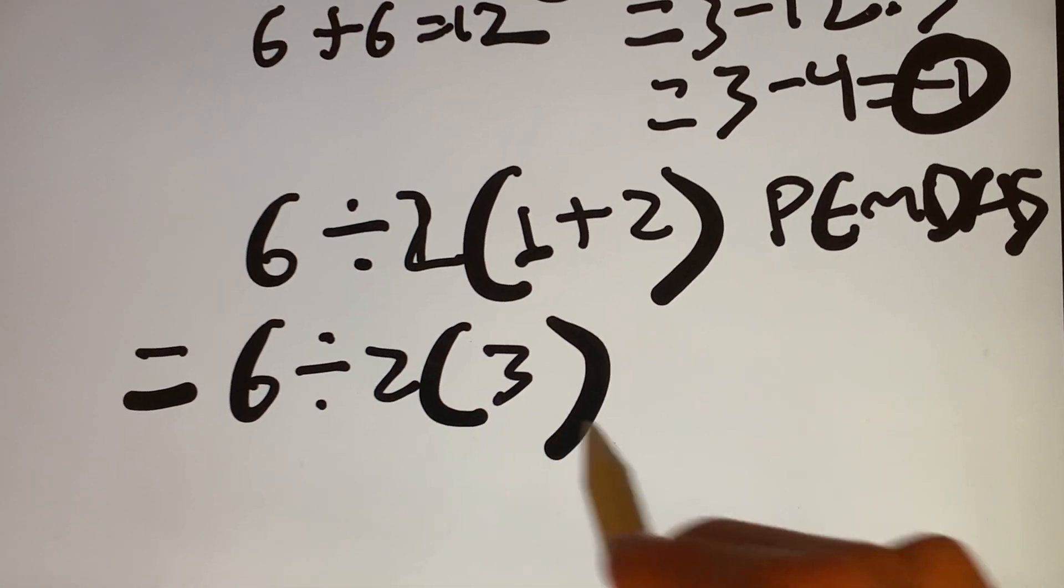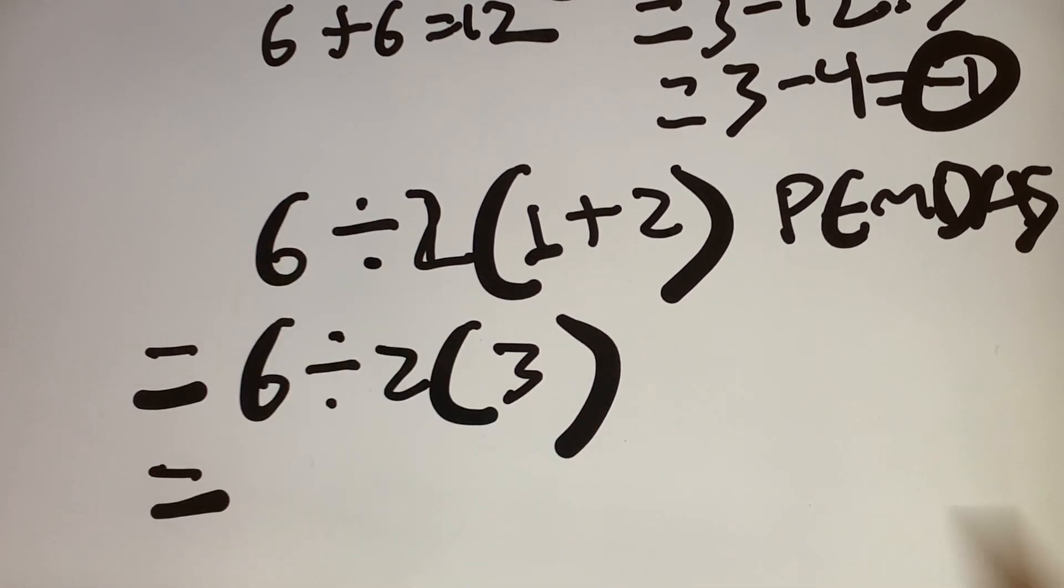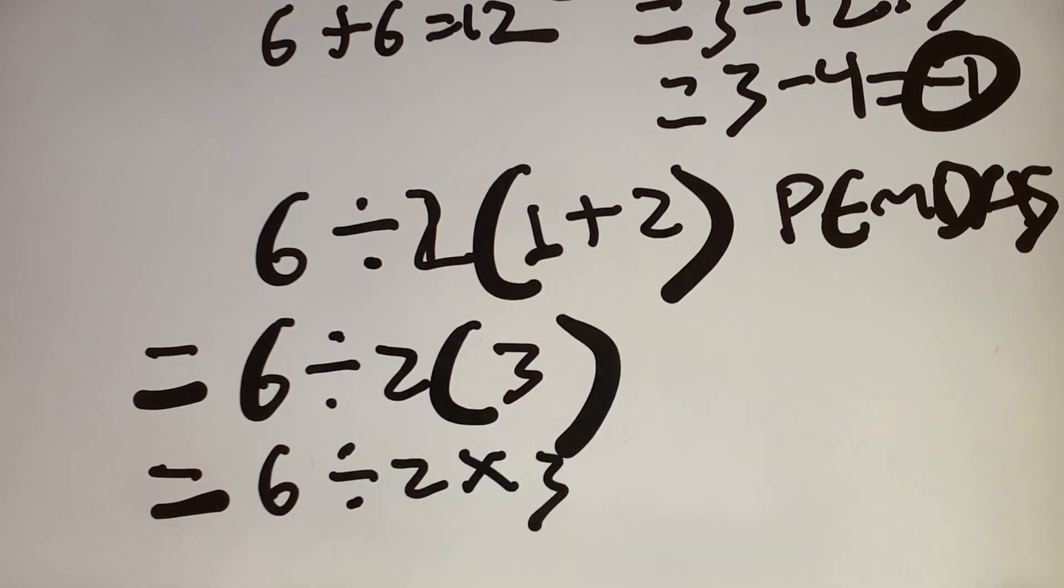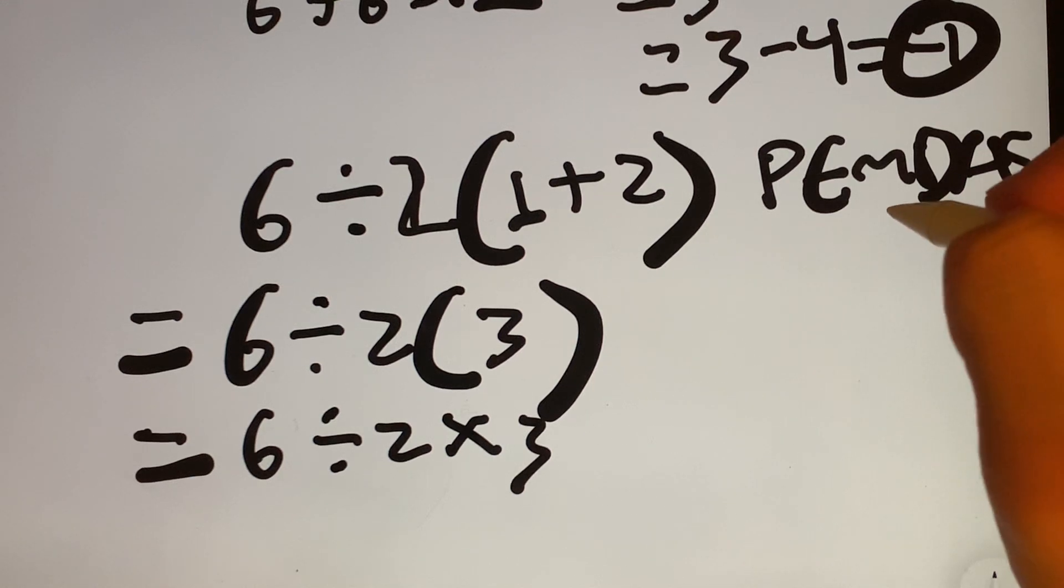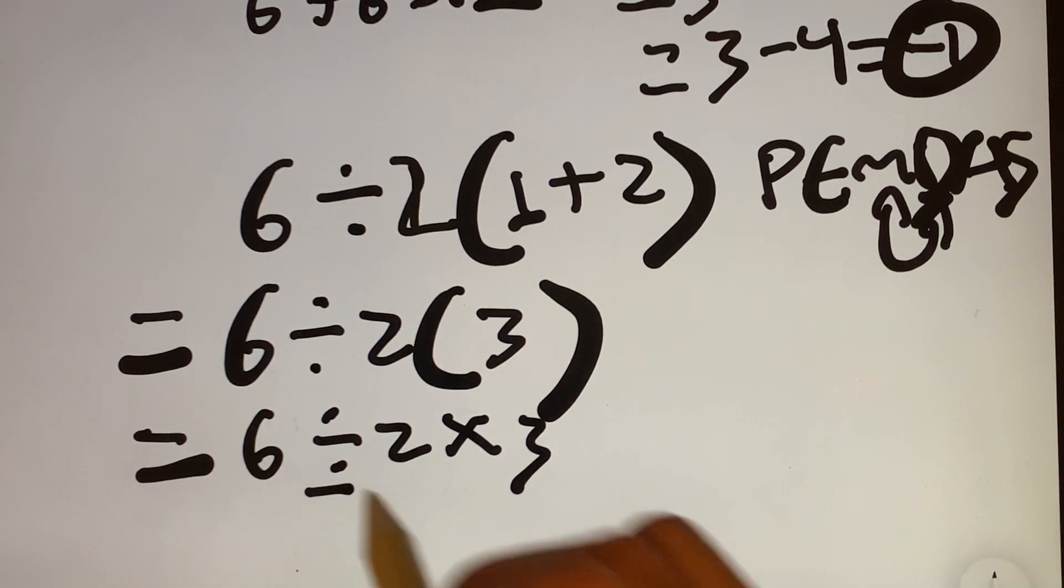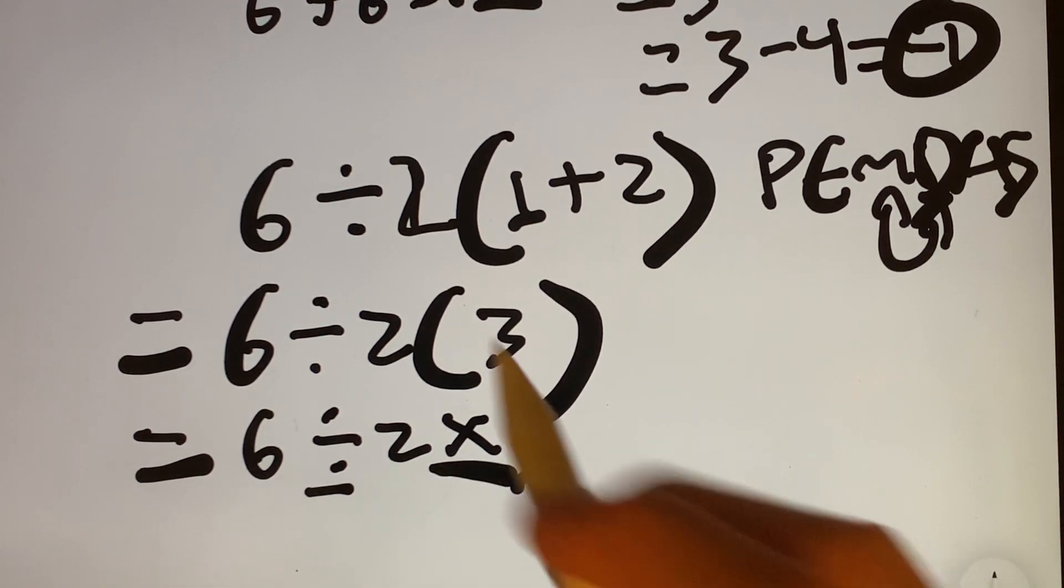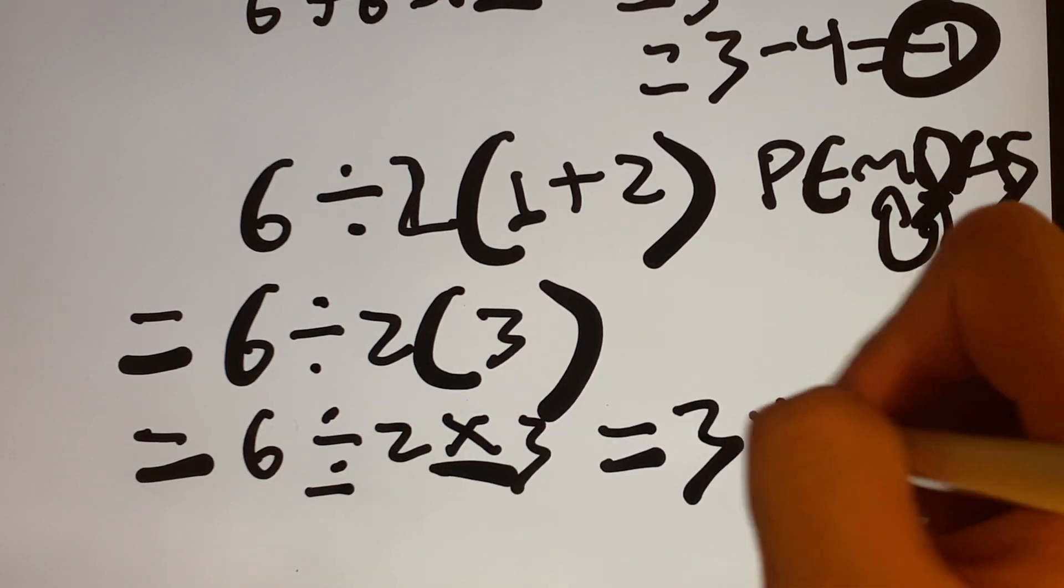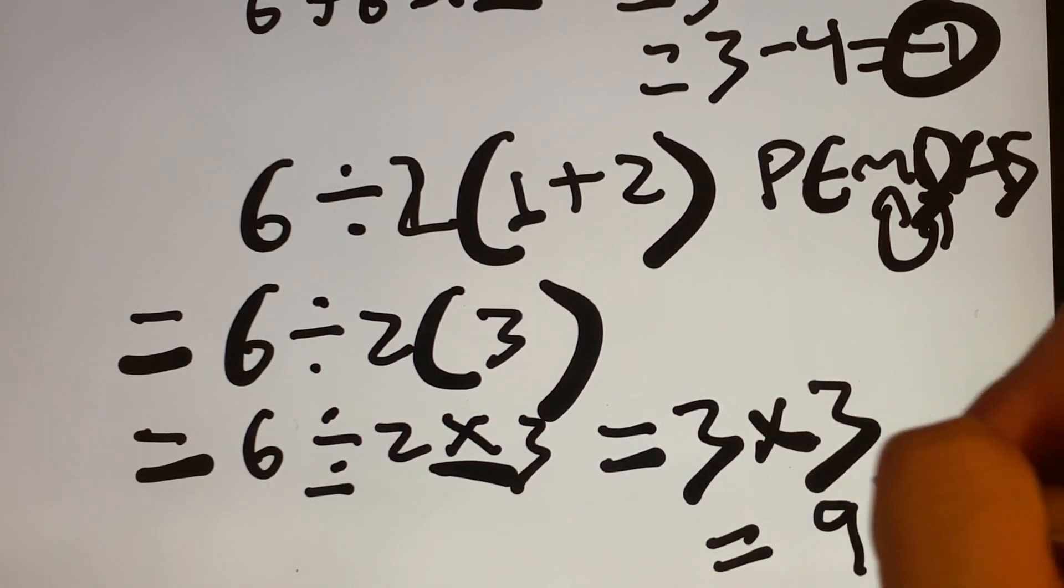Now, I'm going to rewrite 6 divided by 2 times 3 as how I just said it. It's going to be 6 divided by 2 times 3. Now, what's the first thing I'm going to do? PEMDAS tells me that I either do multiplication slash division going from left to right. In this case, I see division multiplication. So I'm going to go left to right. So this becomes 6 divided by 2, which is 3. 3 times 3, which is going to give me 9.